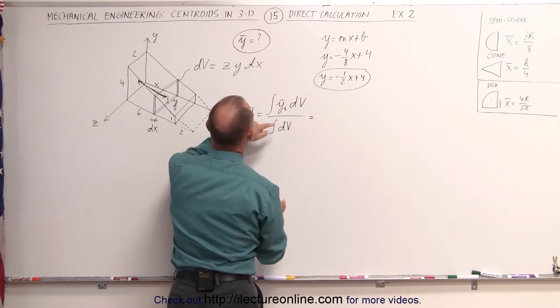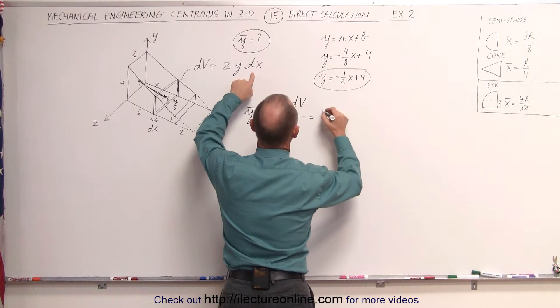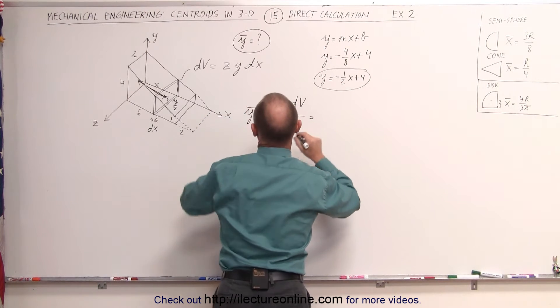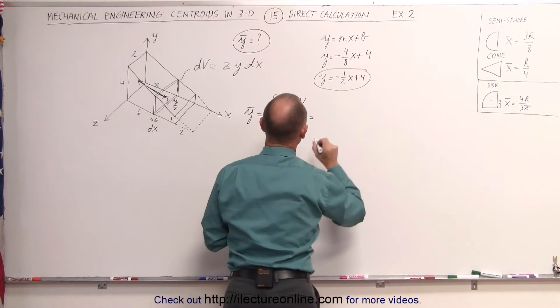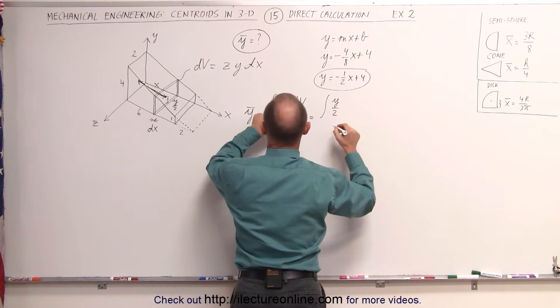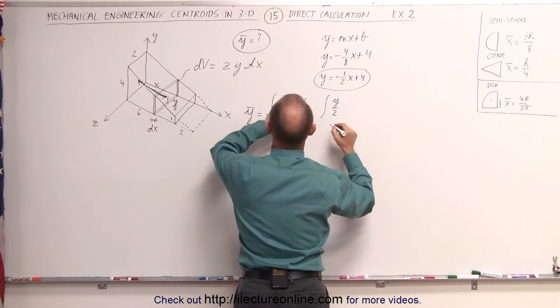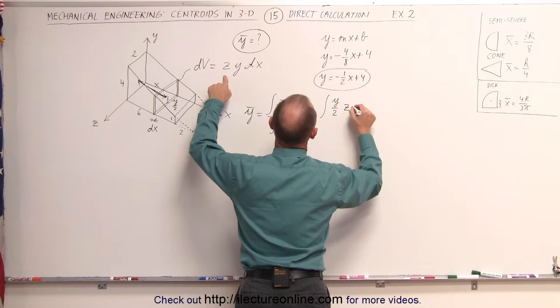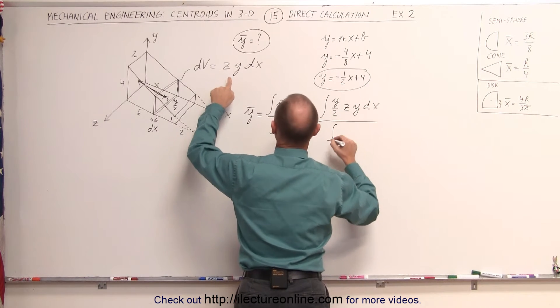When we plug in the dv, the dv here would be z times y times dx, and the y-coordinate of the volume, the small little dv here, is y over 2. The integral of y divided by 2 for the y-coordinate of the centroid of the small little dv times dv, which is z times y times dx, divided by the integral of dv, which is z times y times dx.